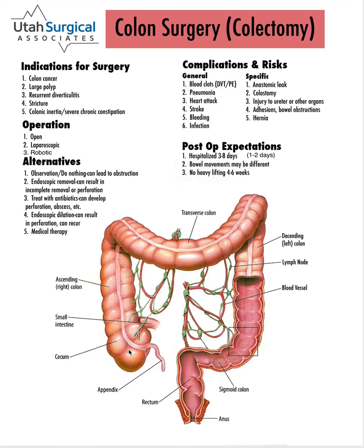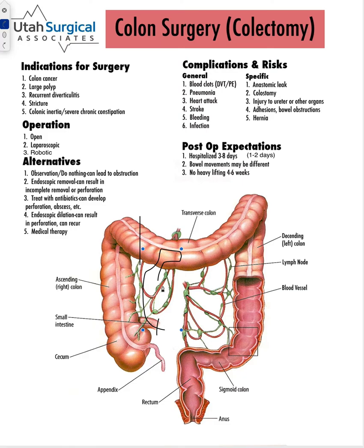One common area to need to be removed is the right colon or ascending colon. In this operation, we typically divide the small intestine right here and then divide the colon usually somewhere about here, and then bring the small intestine up and hook it to the colon right there. That allows what is traveling in the small intestine to then enter the colon and move on its way out.